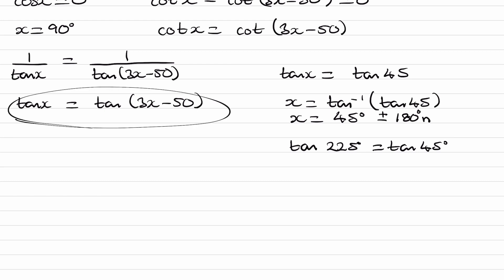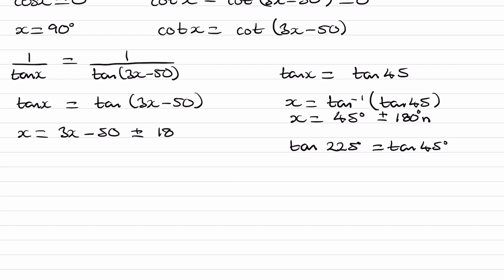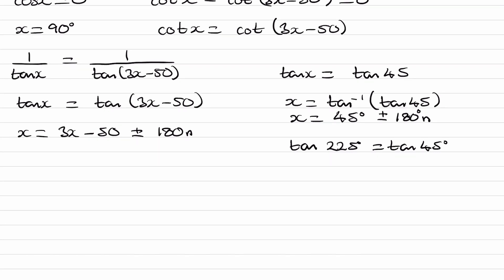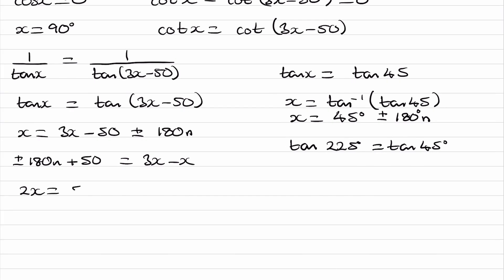So applying this to our equation tan x equals tan(3x minus 50), we do the exact same thing and end up with x equals 3x minus 50 plus or minus 180n. Now we rearrange: bring x to the right-hand side and everything else to the left. So plus or minus 180n plus 50 equals 3x minus x, which is 2x. So 2x equals 50 plus or minus 180n. Divide everything by 2 and we get this — this tells us all of our solutions.